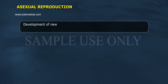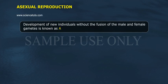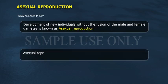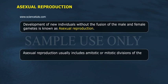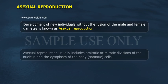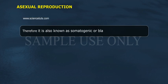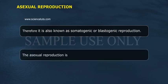Asexual Reproduction. Development of new individuals without the fusion of the male and female gametes is known as asexual reproduction. Asexual reproduction usually includes mitotic divisions of the nucleus and the cytoplasm of the body's somatic cells. Therefore, it is also known as somatogenic or blastogenic reproduction. Asexual reproduction is common only in lower plants and animals.